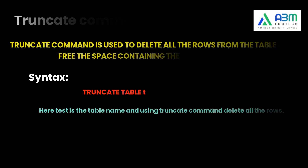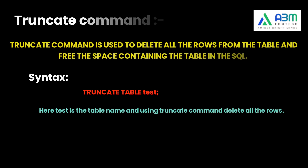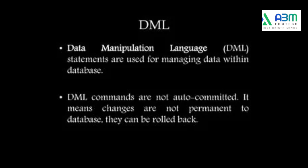The next DDL command is TRUNCATE. It is used to delete all the rows from the table and free the space containing the table. Syntax: TRUNCATE TABLE table_name. For example: TRUNCATE TABLE test. We have now seen all the DDL commands used in SQL to define the structure of the table.